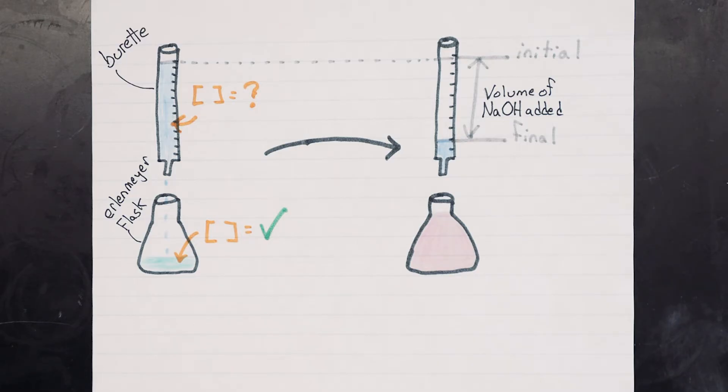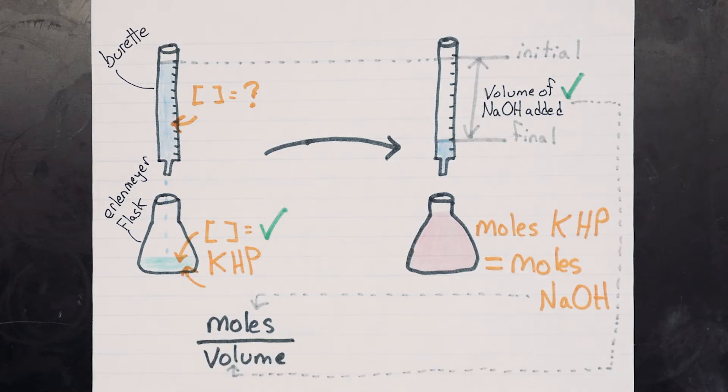In this lab we'll be using potassium acid phthalate or KHP as a standard. We can calculate the number of moles of KHP accurately, and since KHP reacts in a one-to-one ratio with sodium hydroxide, we can measure how many moles of sodium hydroxide we have by measuring how many moles of KHP react with it. We know the volume of sodium hydroxide we added, so calculating the concentration in terms of molarity is just dividing moles by liters.